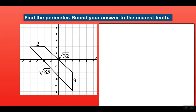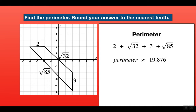We get the perimeter by adding all four sides. In your calculator add all four numbers: 2 plus the square root of 32 plus 3 plus the square root of 85. Always put the number before hitting the square root sign. When you do that correctly you get approximately 19.876, and rounded to the nearest tenth our final answer is 19.9 units. That's the perimeter of this shape.